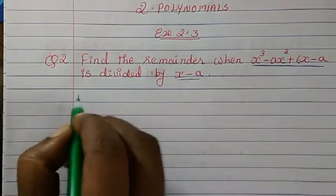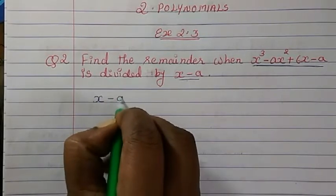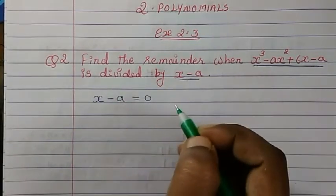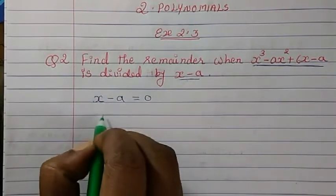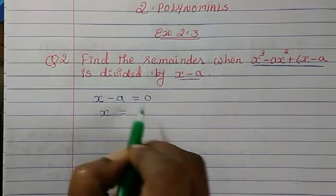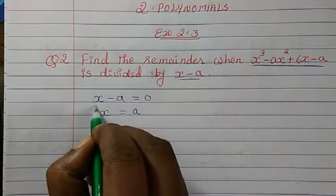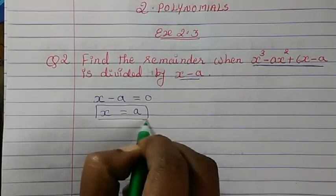So first let us find out the value for x. x - a = 0. Now we keep x as it is. When minus a comes to the other side it will become plus a. So now our value of x is a.